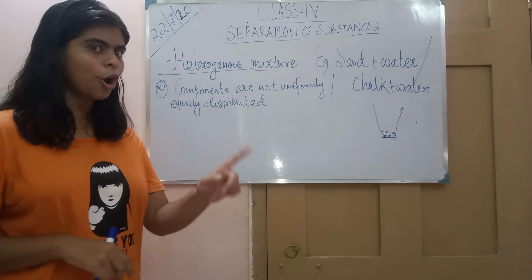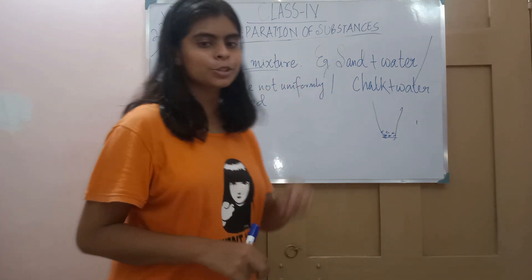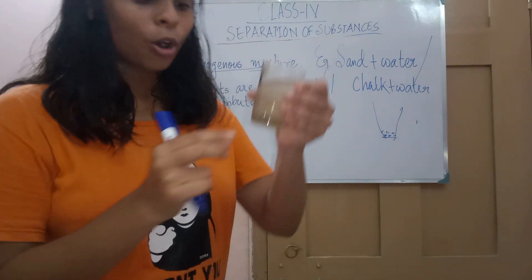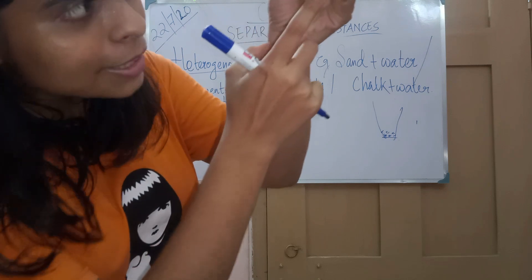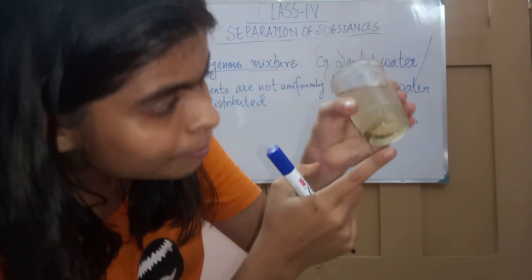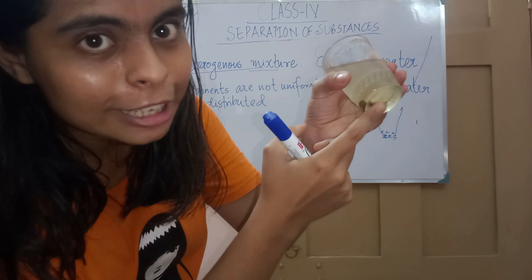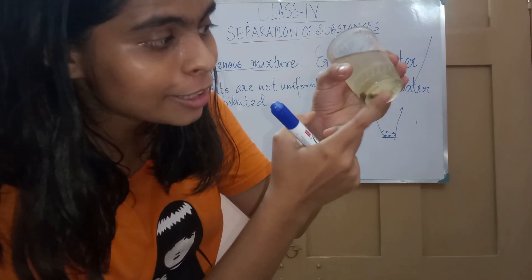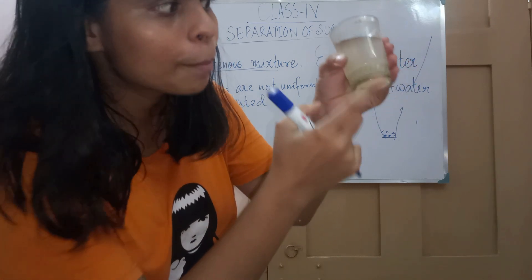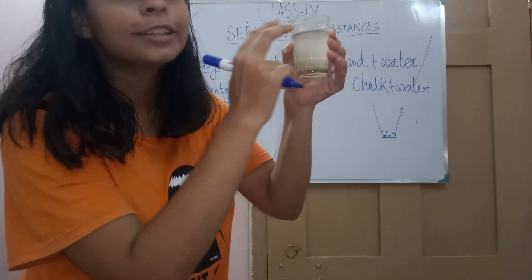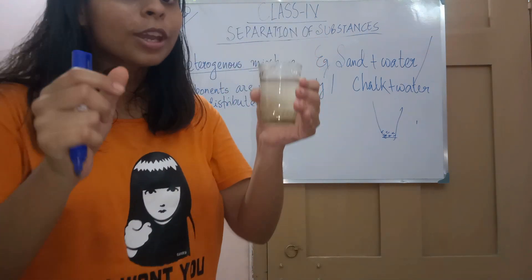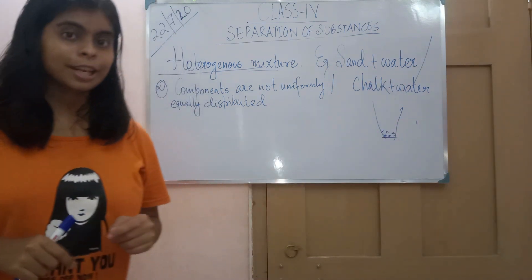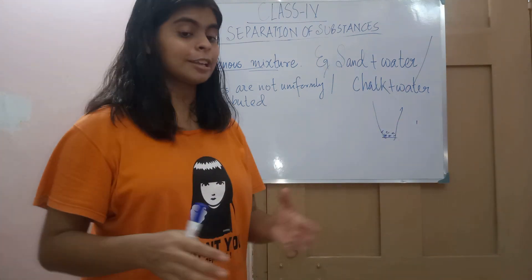This kind of mixture — chalk plus water, sand plus water — you can see that the sand is getting settled down. In the below layer, more sand particles are present, but in the above layer, less sand is present. So here it is not equally distributed, unlike sugar plus water where it is distributed equally. This is a heterogeneous mixture.